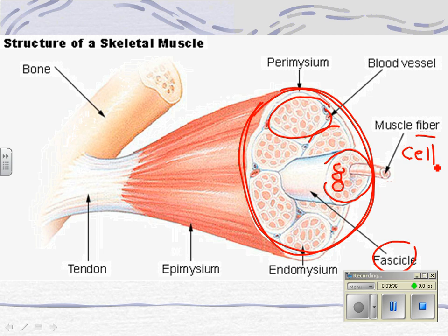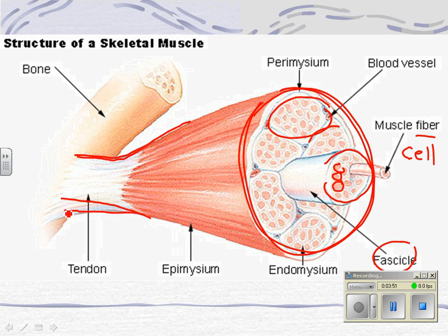The tendon is actually just an extension. When we see a muscle, there's a clear coating over the top of it, and the extension of that coating becomes a tendon. It's dense connective tissue, and it's attached to the bone, blending in with the covering on the bones.